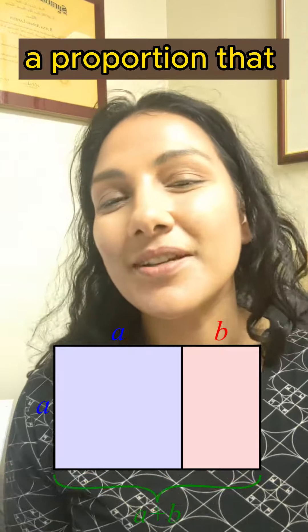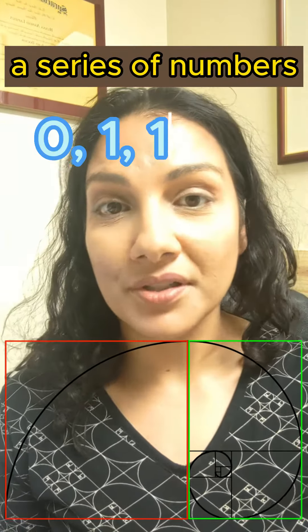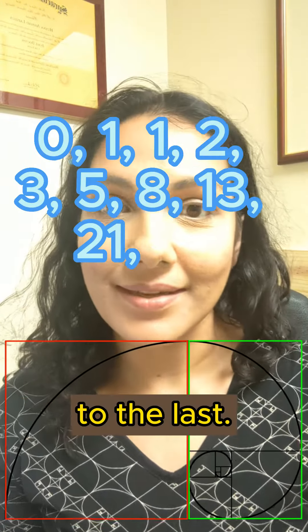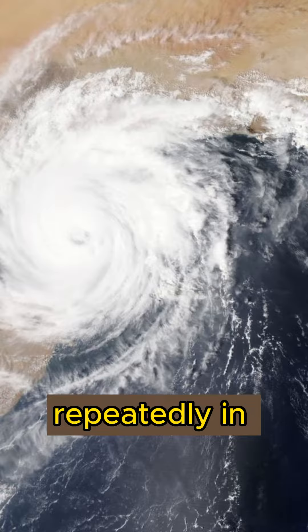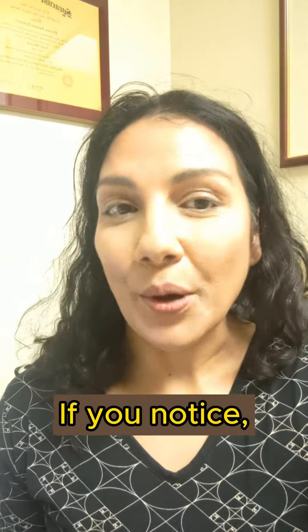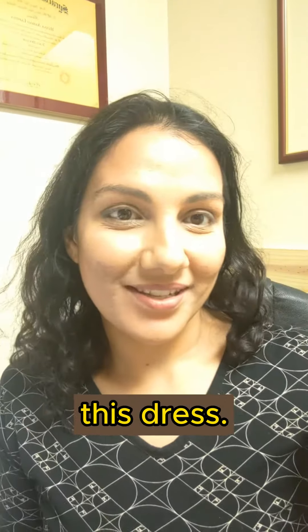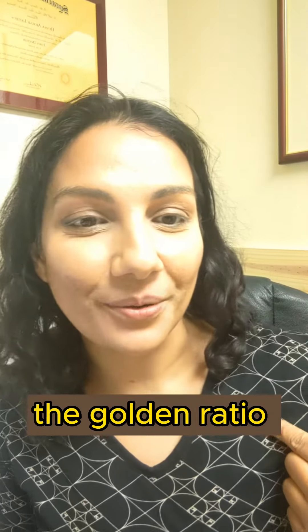They discovered a proportion that can be described by a series of numbers, each one added to the last. It can be found repeatedly in our world. If you notice, I love to wear this dress. It shows the golden ratio right on it.